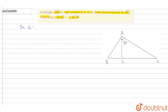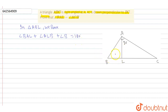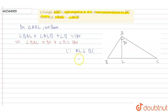Now, in triangle ABL, we have: angle BAL plus angle ALB plus angle B is equal to 180 degrees, because we know that the sum of all angles in a triangle is equal to 180 degrees. Since AL is perpendicular to BC, angle ALB is equal to 90 degrees.